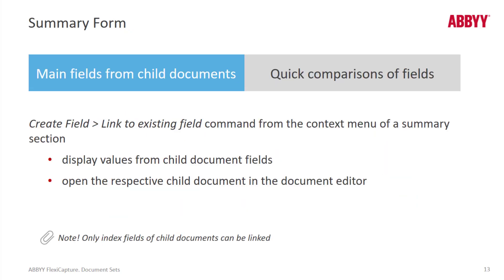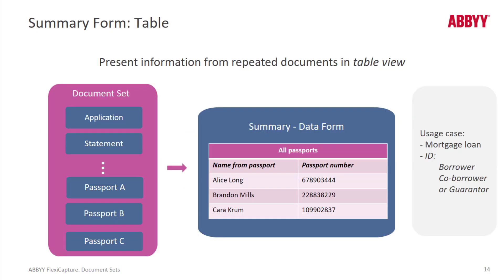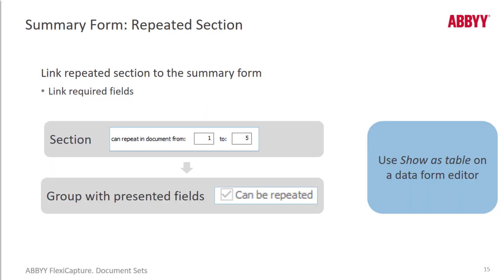The summary form is a really important feature of document sets. You build the summary form to show the main fields from child documents — it's very easy to specify what those fields are, and it allows very quick comparison of fields. Summary forms can show data in table format. For example, in a document set with multiple passports for different individuals, you can display that in a table view and use repeated sections as well. If the same data shows up in multiple iterations of a given document, you can specify that in your document section and show that data in table format.